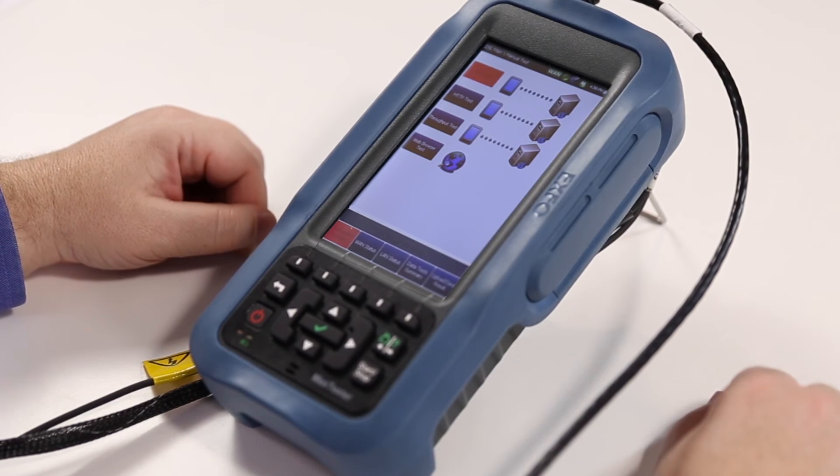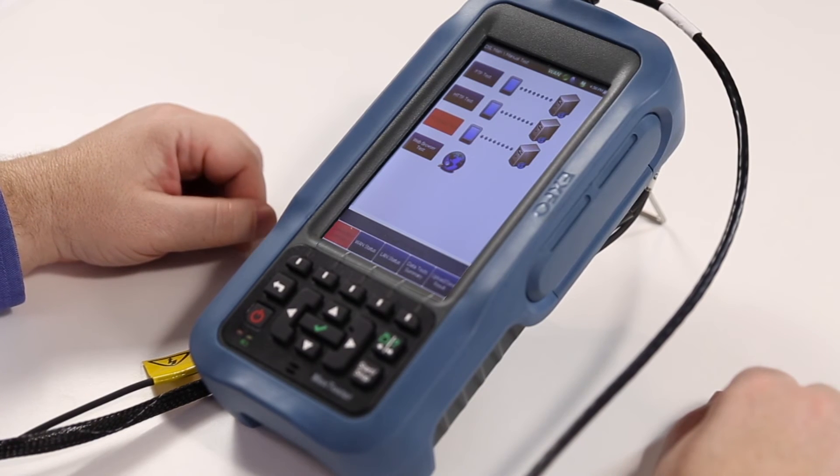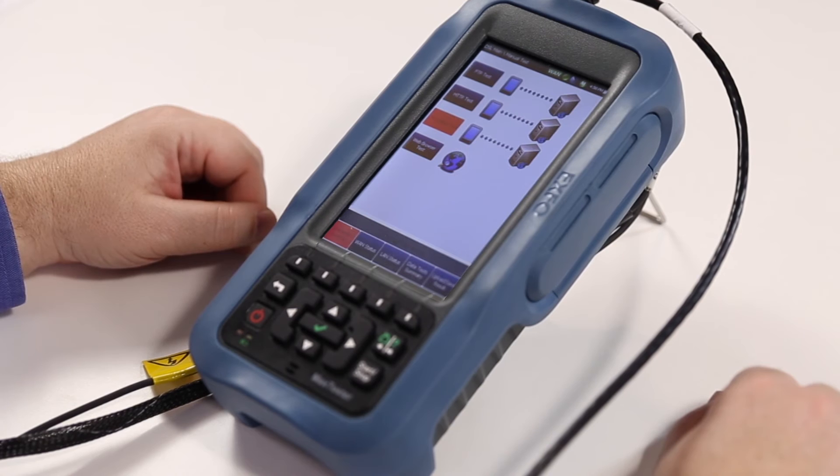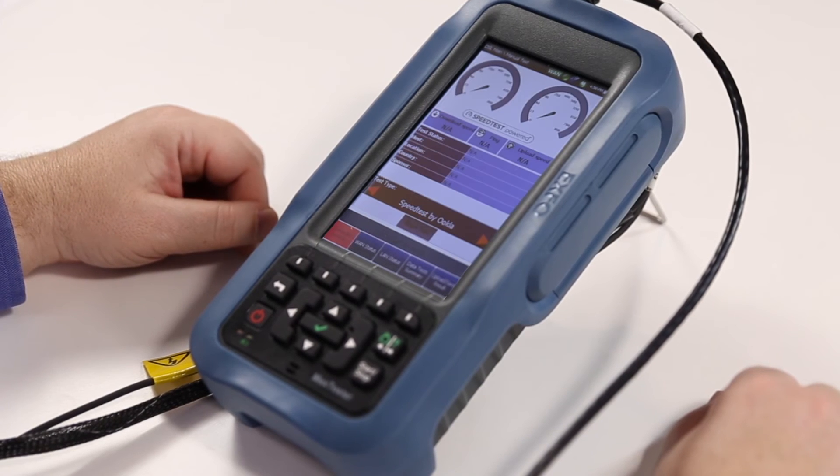By selecting the throughput test button, you will have access to the Ookla speed test powered solution on the Mac 635G. By selecting the begin test button,